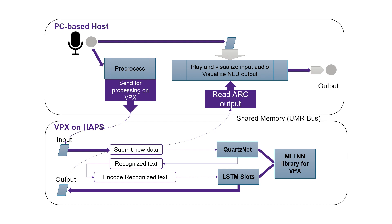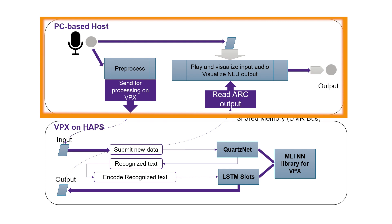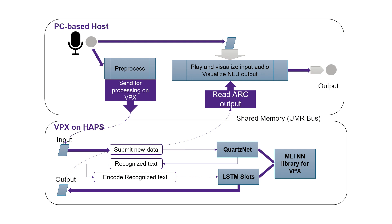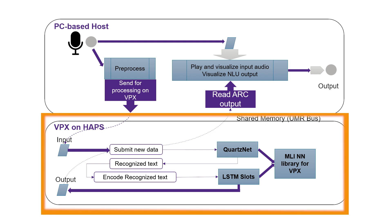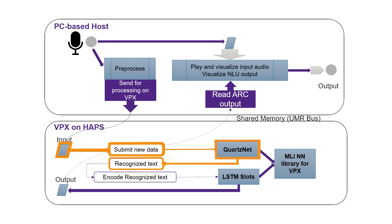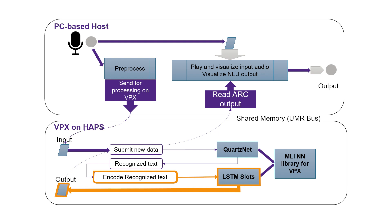The demo contains two main parts: the host and the accelerator. The host is responsible for reading the audio file, doing any required preprocessing, sending the preprocessed input to the VPX processor, receiving the results, and visualizing them. The ArcVPX processor runs two neural network graphs using optimized MLI library kernels. First, it runs QuartzNet CNN on the preprocessed input to perform speech recognition. Then it encodes the resulting text and processes it with a lightweight LSTM encoder-decoder model to perform joint slot and intent recognition.